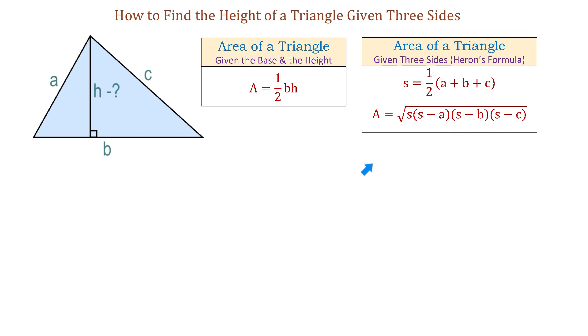Now, if these two formulas produce the same area, then we can write the following: one-half times b times h equals square root of s times (s minus a) times (s minus b) times (s minus c).